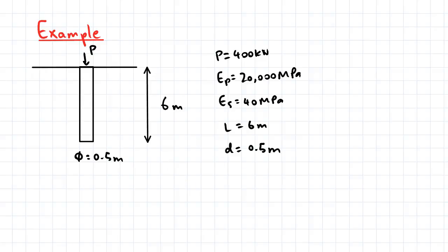So the equation for the settlement of a single floating pile is S equal to P over LES multiplied by I.